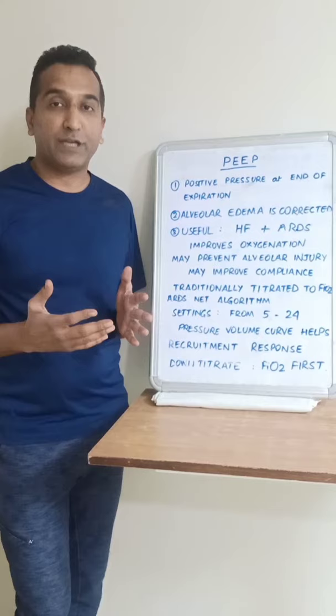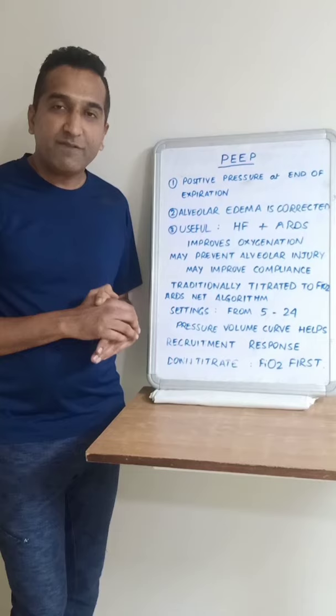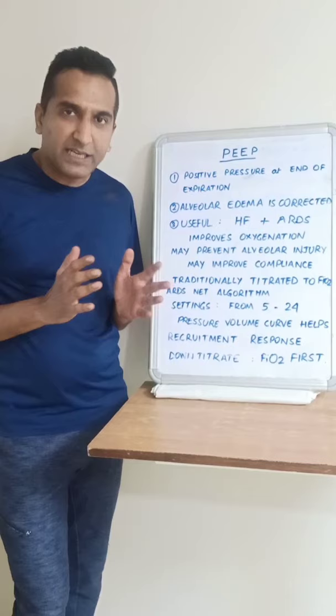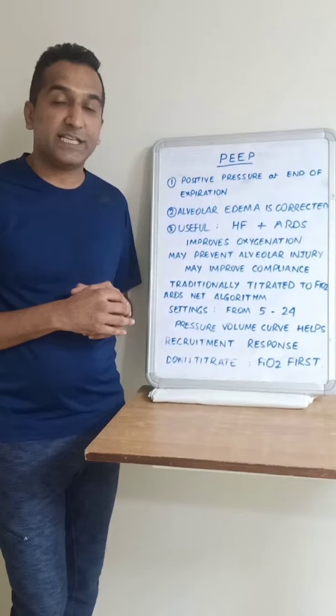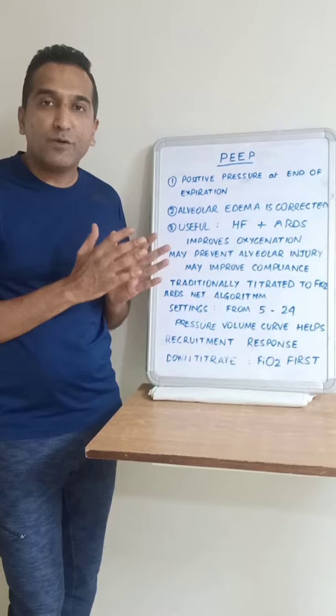When you do a recruitment maneuver, it is best to keep the patient paralyzed, because if they cough with such high pressures, they can cause lung injury. Whenever we apply high PEEP, we keep patients well sedated so that coughing does not occur. High PEEP may be uncomfortable to the patient, and higher sedation levels may facilitate mechanical ventilation. You can start with high PEEP and come down, or start with lower PEEP and up-titrate to reach the optimal PEEP.